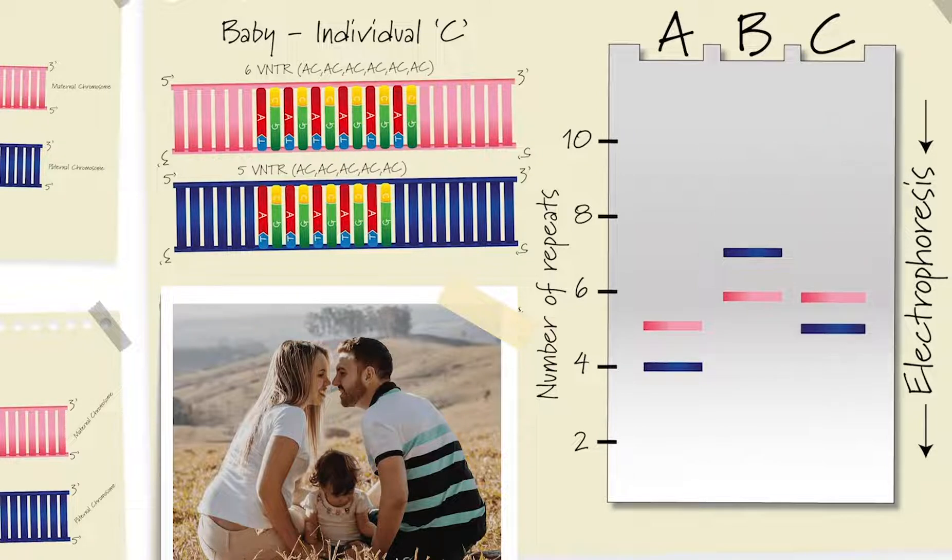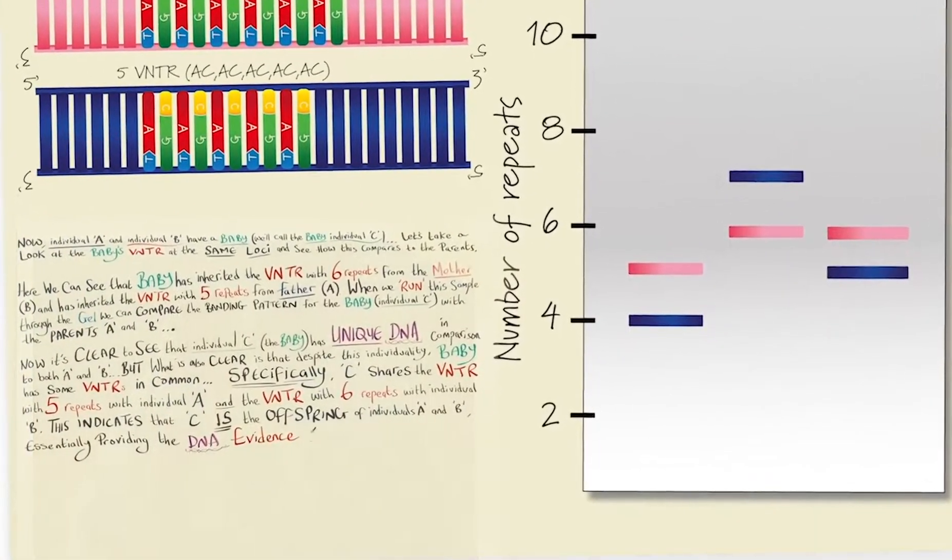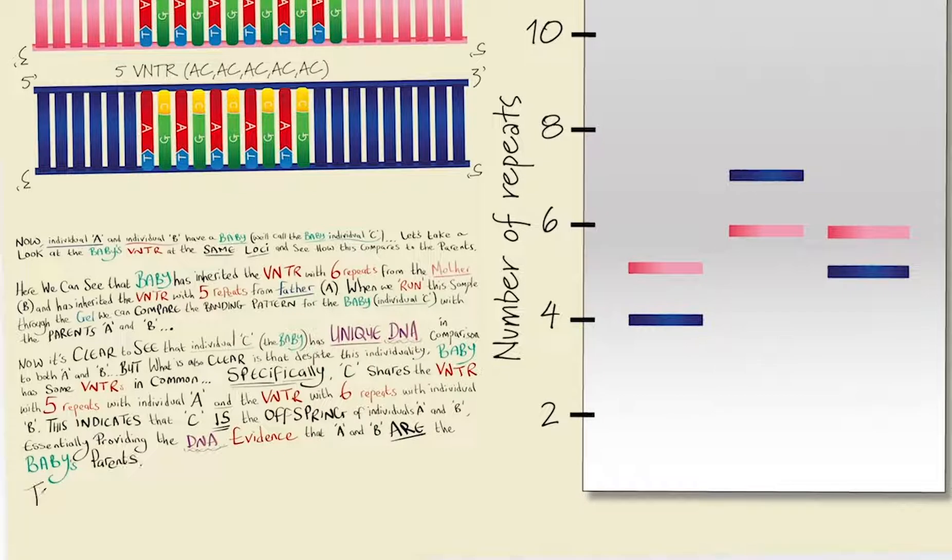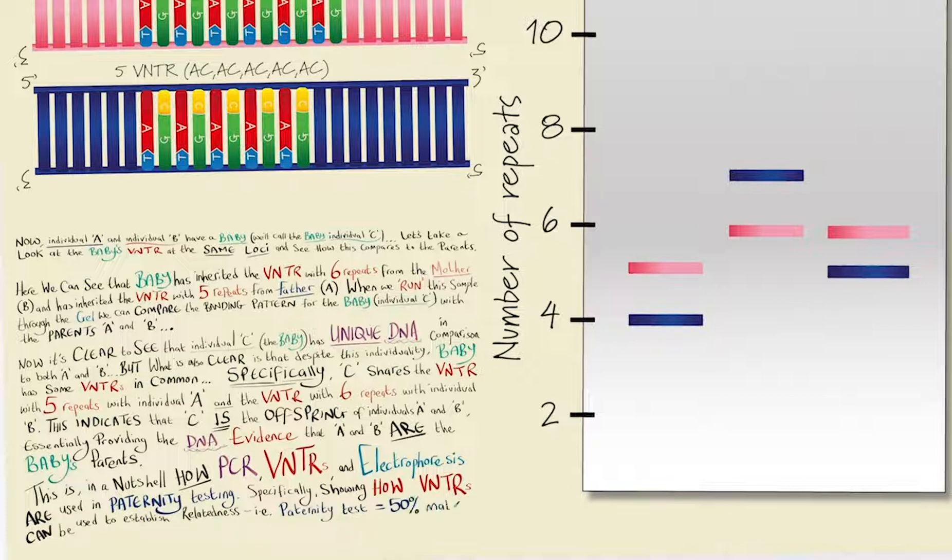Now, it's clear to see that individual C, the baby, has unique DNA in comparison to both A and B, but what is also clear is that despite this individuality, baby has some VNTRs in common. Specifically, C shares the VNTR with 5 repeats with individual A, and the VNTR with 6 repeats with individual B. This indicates that C is the offspring of individuals A and B, essentially providing the DNA evidence that A and B are this baby's parents. And this is, in a nutshell, how PCR, VNTRs, and electrophoresis are used in paternity testing, specifically showing how VNTRs can be used to establish relatedness, in a paternity test where we would have a 50% match between the baby and the parent.